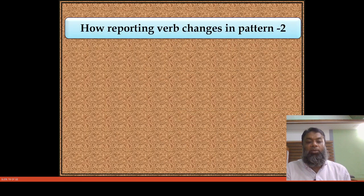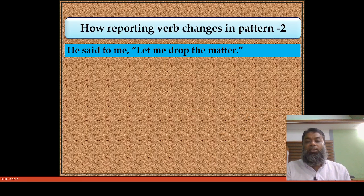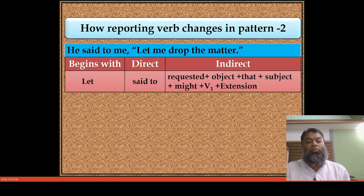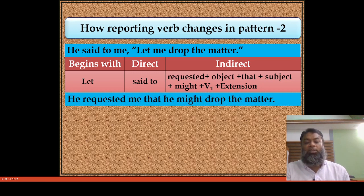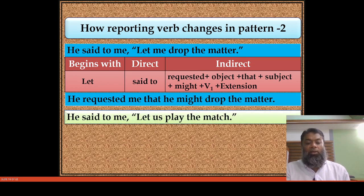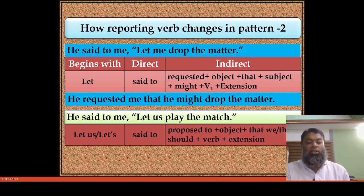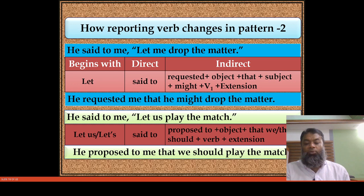Now, how does the reporting verb change in pattern two? 'He said to me, let me drop the matter' — the structure becomes: requested plus object plus 'that' plus subject plus 'might' plus verb plus extension. The answer: he requested me that he might drop the matter. Another example: 'He said to me, let us play the match' — this is a proposal — he proposed to me that we should play the match.